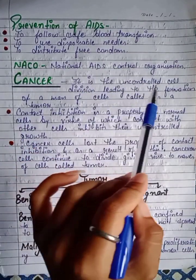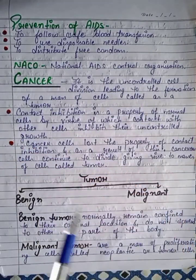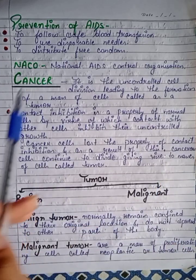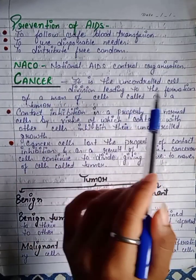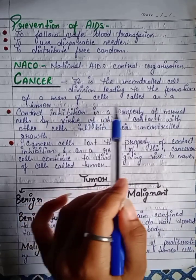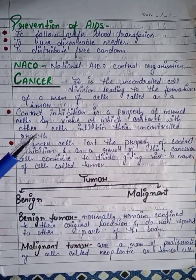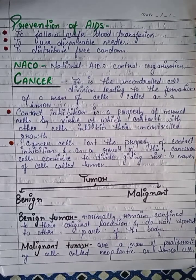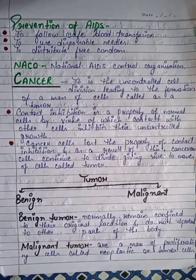Now, cancer. Cancer is an uncontrolled cell division leading to the formation of a mass of cells called a tumor. Normal cell division becomes uncontrolled, resulting in a mass of cells, which we call a tumor.